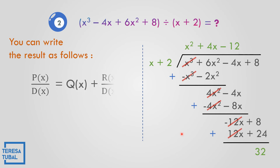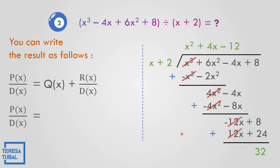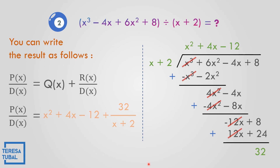The quotient Q(x) is x squared plus 4x minus 12, and the remainder is 32. So 32 all over the divisor, which is x plus 2. The final answer for question number 2 is x squared plus 4x minus 12 plus 32 over x plus 2.